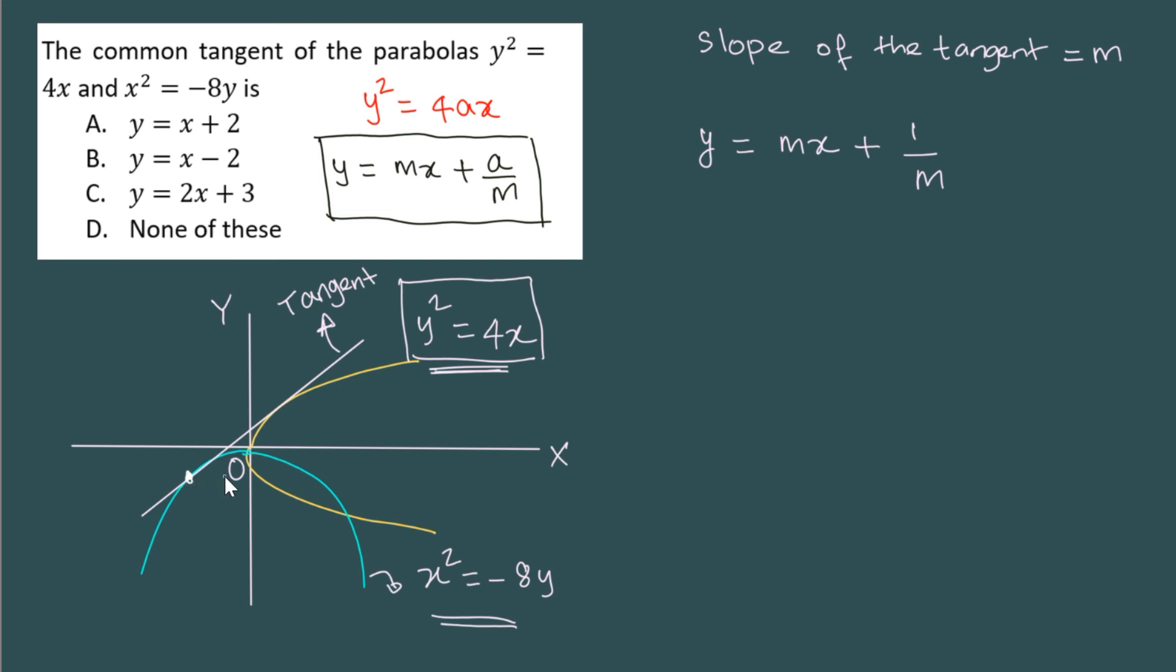There is only one point common to the tangent line as well as the parabola. So if the coordinates of this point are x comma y, they must satisfy both the parabola as well as the tangent. So suppose if you are trying to get those x and y values, in order to get the value of m, what can you do?